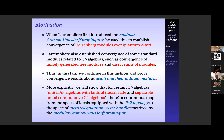Latrémolière established some natural results for standard structures. I saw there's still the question: what about ideals? Ideals have natural convergence — what if their associated modules also converge in the modular propinquity? That's the motivation and idea for this work. We were able to do this for unital AF algebras equipped with a faithful tracial state, and for separable unital commutative C*-algebras — complex-valued continuous functions on a compact metric space.